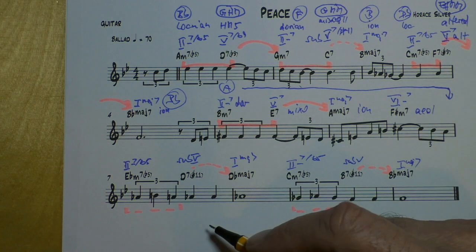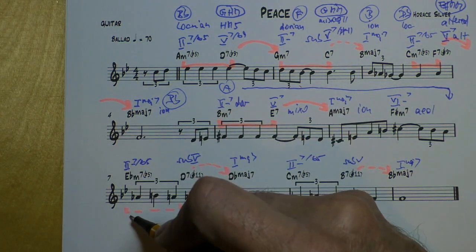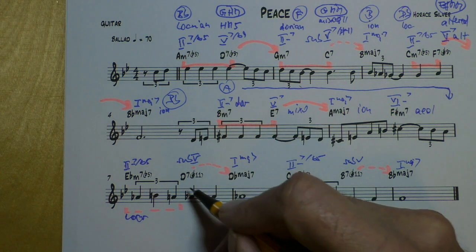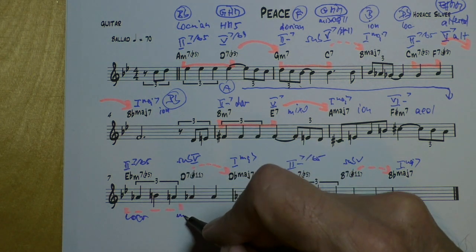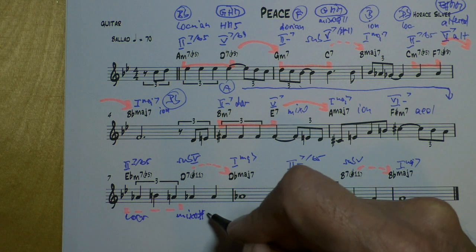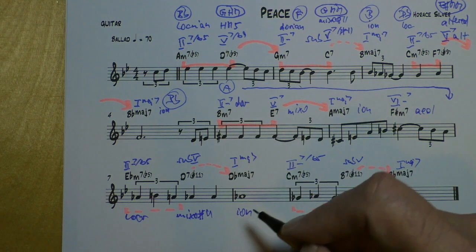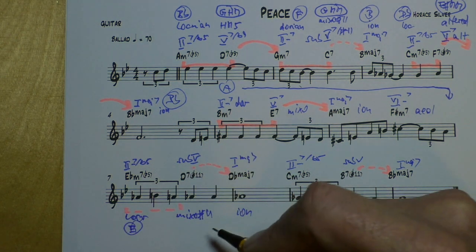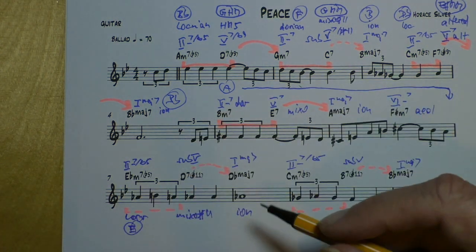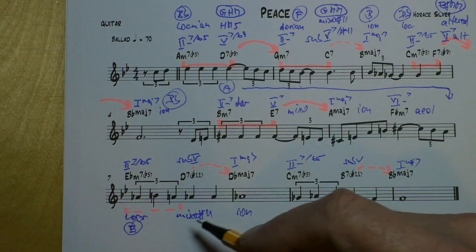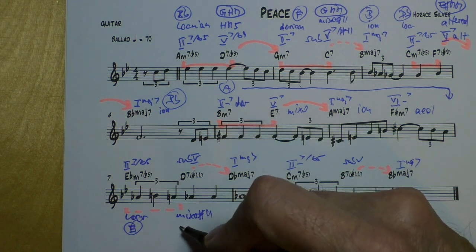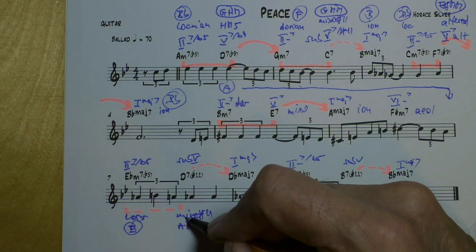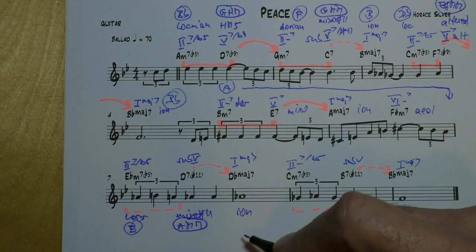We continue. 2-7b5 always Locrian. D7-sharp-11, a sub-5 always calls for a Mixo-sharp-11 scale and that's Ionian. So, the corresponding basic scales are Locrian, Eb-7. That's the key of E. Seventh degree actually would be D-sharp. Mixolydian-sharp-11 again, that's coming from melodic minor and from the A melodic minor scale. And that is D-flat.